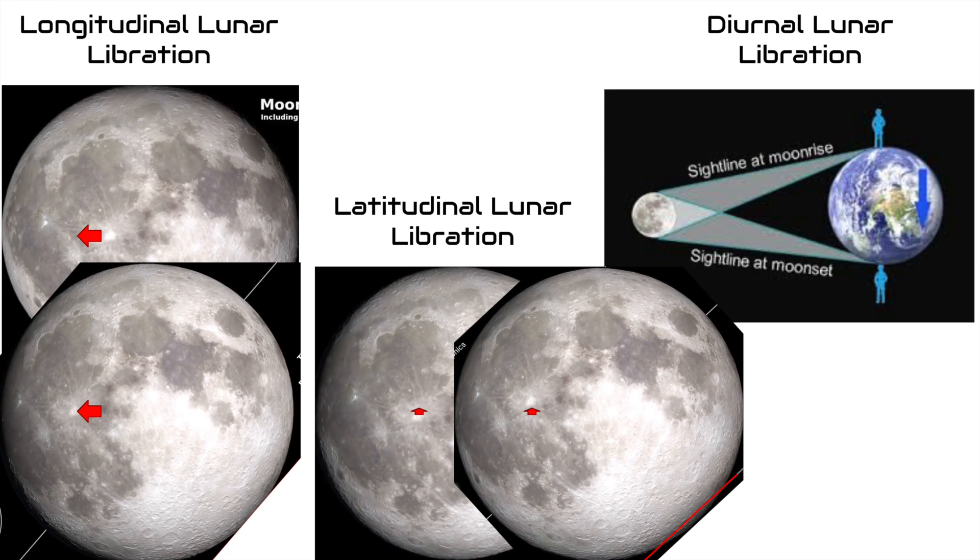The phenomenon is called lunar libration. There are three types of lunar libration: longitudinal, latitudinal, and diurnal.